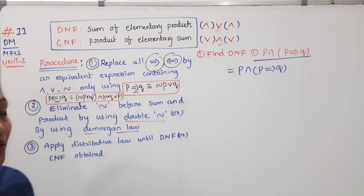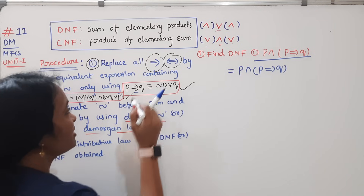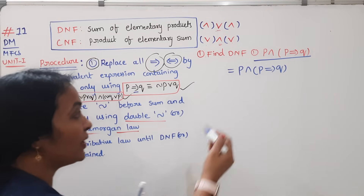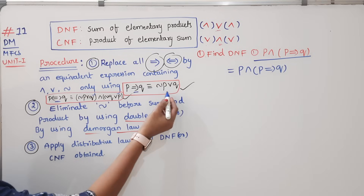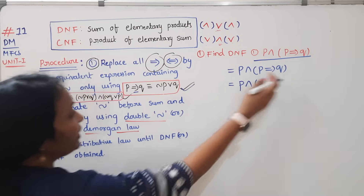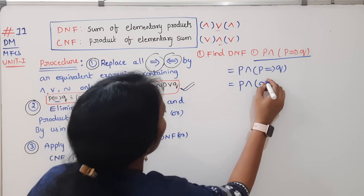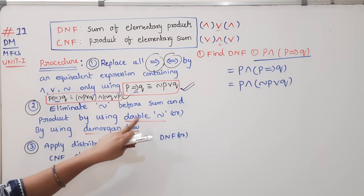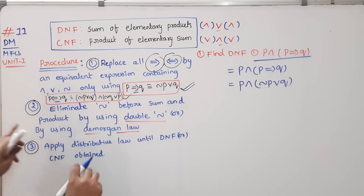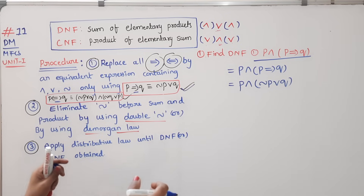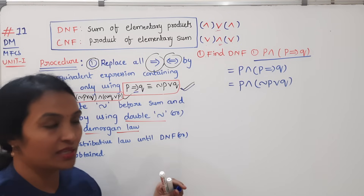We have implies or biconditional — we have to eliminate the implies symbol. P implies Q — we already know the formula. Substitute this value: it becomes P and (negation P or Q). Now we eliminate double negation — the two negations cancel. Apply De Morgan's law or distributive law as needed.